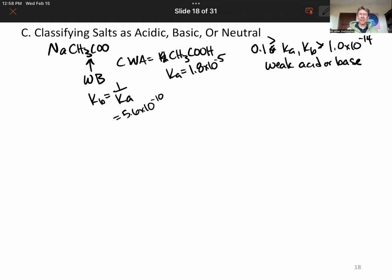If you have a Ka or Kb value that is greater than 0.1, somewhere around there, then you are a strong acid. If you have a Ka or Kb value less than 1.0 times 10 to the minus 14, that means you are an inert acid or base, also sometimes called very weak.